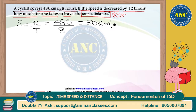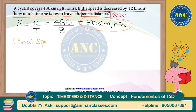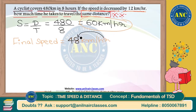Initially, I am traveling at 60 kilometers per hour. The second statement says the speed is decreased by 12 kilometers per hour. Decreasing my speed by 12 means my final speed becomes 60 minus 12, which is 48 kilometers per hour. At 48 kilometers per hour, in one hour I cover 48 kilometers. But the question asks: how much time to travel the same distance of 480 kilometers?